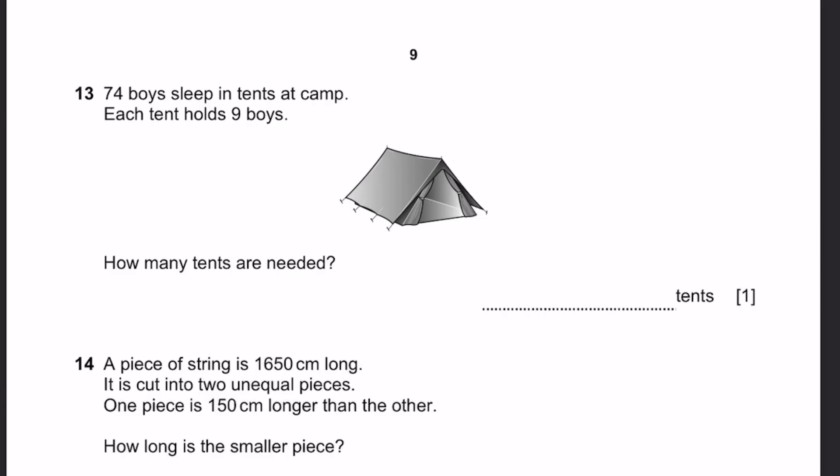Question 13. 74 boys sleep in tents at a camp. Each tent holds 9 boys. How many tents are needed? So that'll be 74 divided by 9, which is equal to 8.22222. That'll be equal to 9 tents, because we need an extra tent for this decimal place. We need one more tent, which is 9.